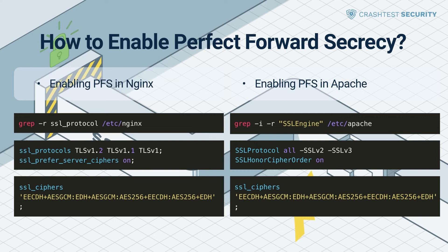Enabling PFS in Apache: locate your SSL protocol configuration on the server, assuming /etc/apache as the base directory. Proceed to add the following lines to the configuration. Set the SSL cipher and choose your preferred cipher configuration, with or without RC4, or RC4 as a last resort. Then restart Apache using: apachectl k restart.